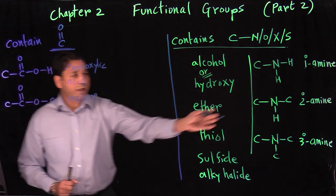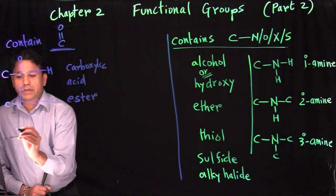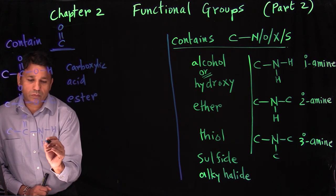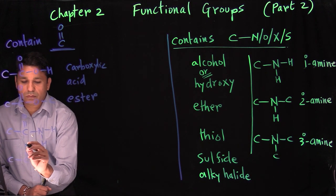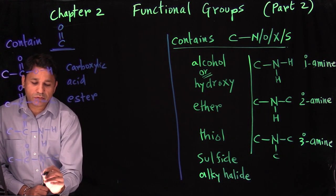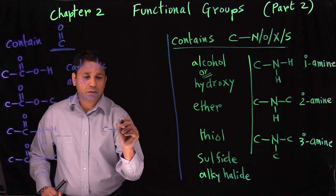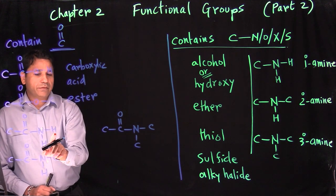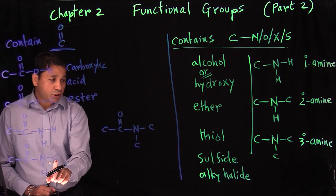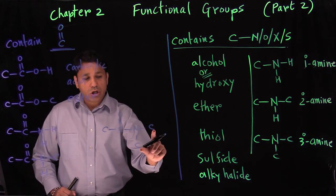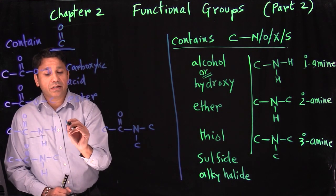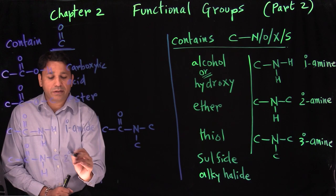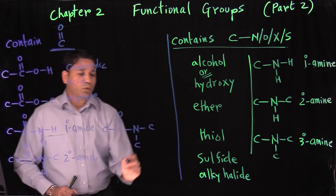Similarly to primary, secondary, and tertiary amines, we also have the same pattern here. With NH2 attached to the carbon-oxygen double bond, that is primary amide. Replace one hydrogen with a carbon — secondary amide. Replace both hydrogens with two carbons — tertiary amide.